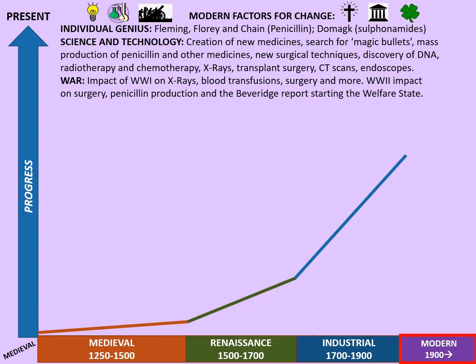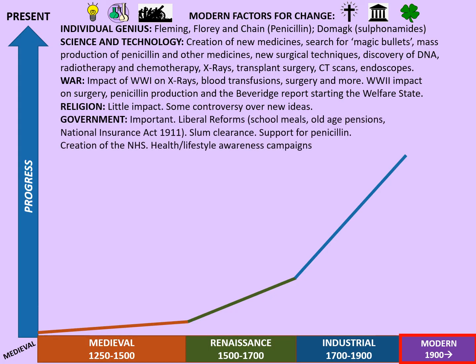During World War II, the Beveridge Report started off the welfare state and eventually established the NHS. Religion by this point has little impact, although there is some controversy over new ideas based upon some religious ideas too. Government is really important at this time: there are the Liberal Reforms in the early 20th century with Lloyd George's People's Budget, providing school meals, old age pensions, the National Insurance Act of 1911, increasing slum clearance, support for penicillin before and after the Second World War, the creation of the NHS in 1948, and health and lifestyle awareness campaigns. Fleming's discovery of penicillin is the key example of chance and luck — it was only by chance that a spore of penicillin mould landed in exactly the right place, but it took the prepared mind of Fleming himself to recognise its importance.